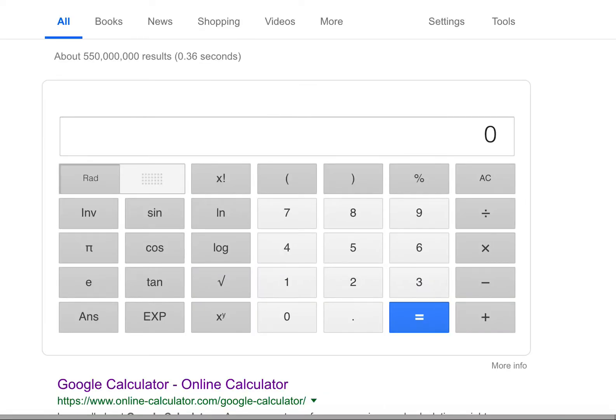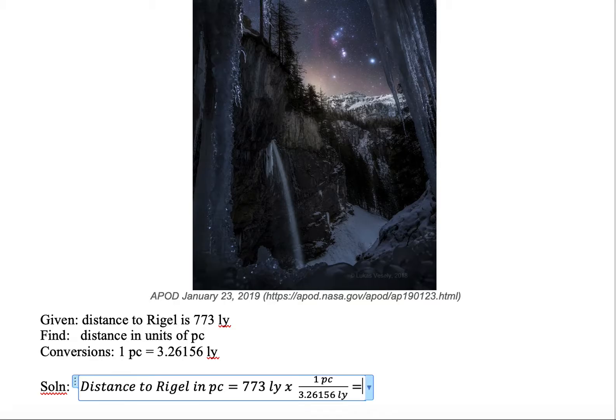So here's our Google calculator. We want to take 773 and multiply it by 1, and we hit the equal sign. And of course, we get 773. So we've done the first part, 773 multiplied by 1.